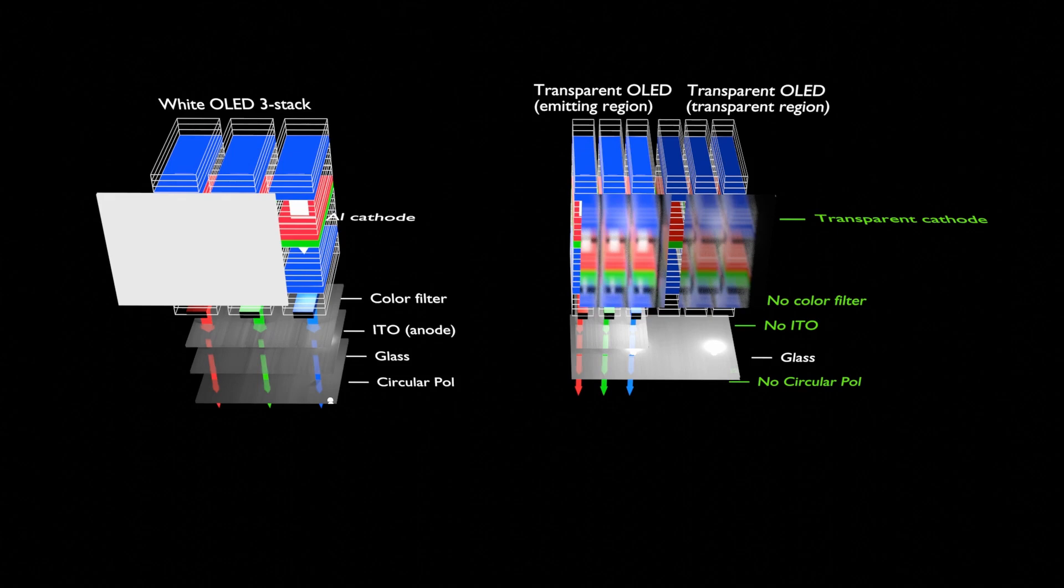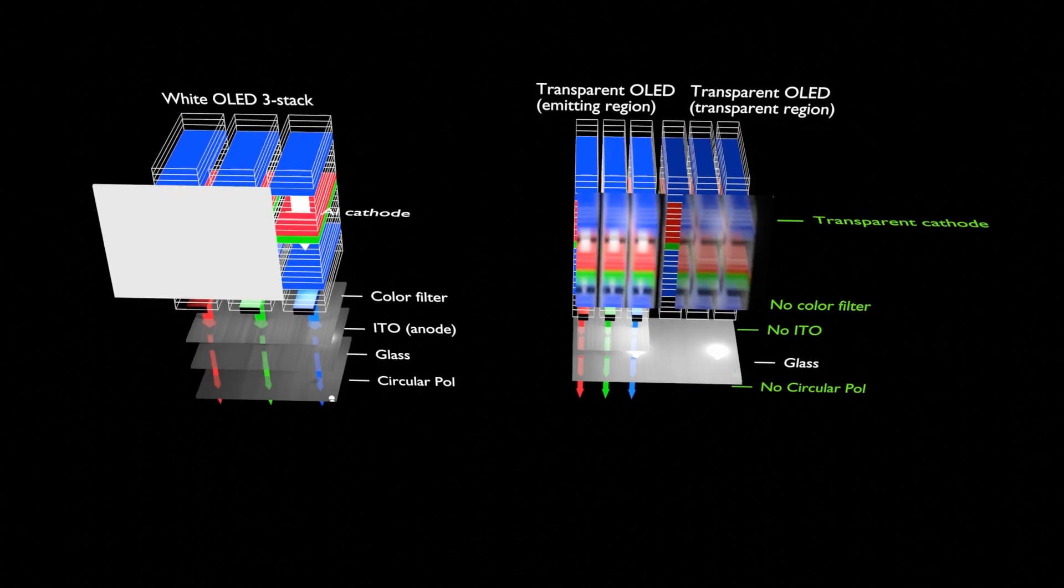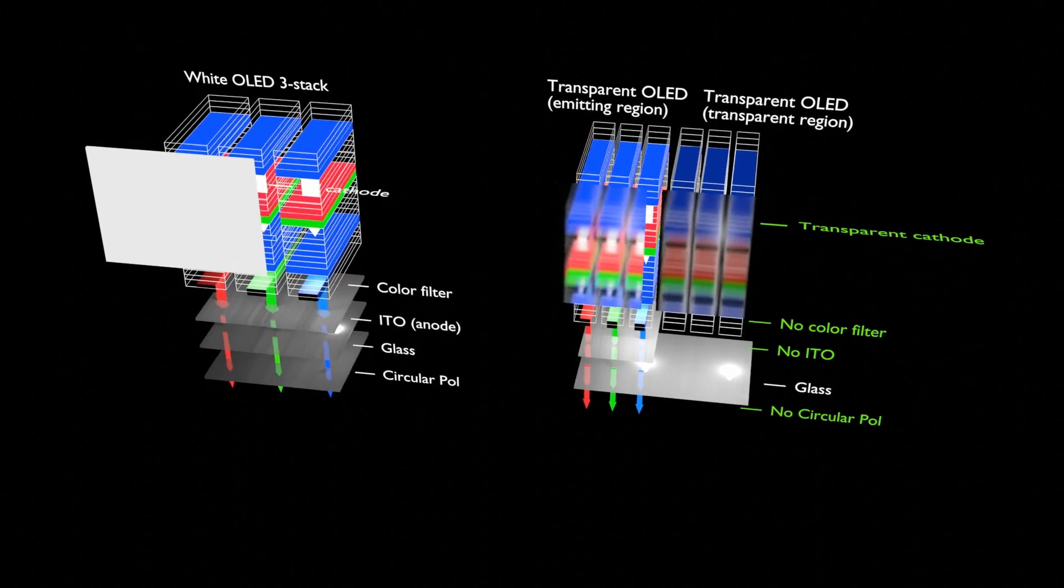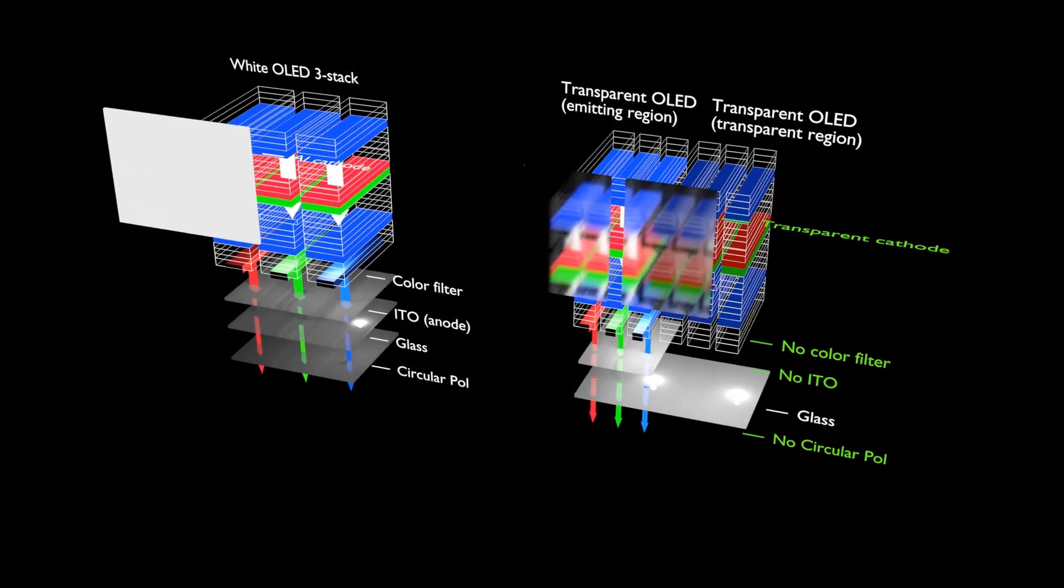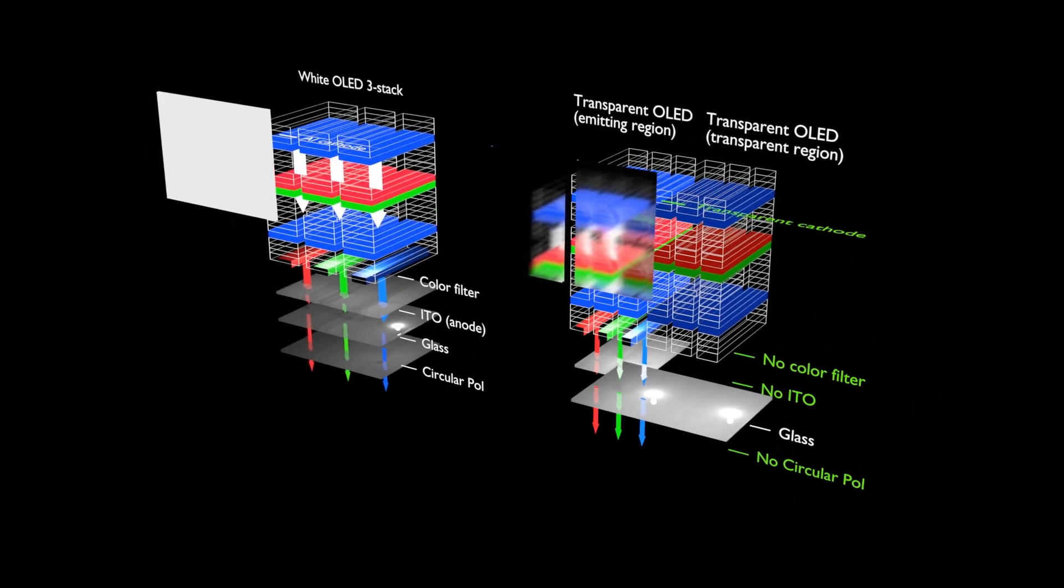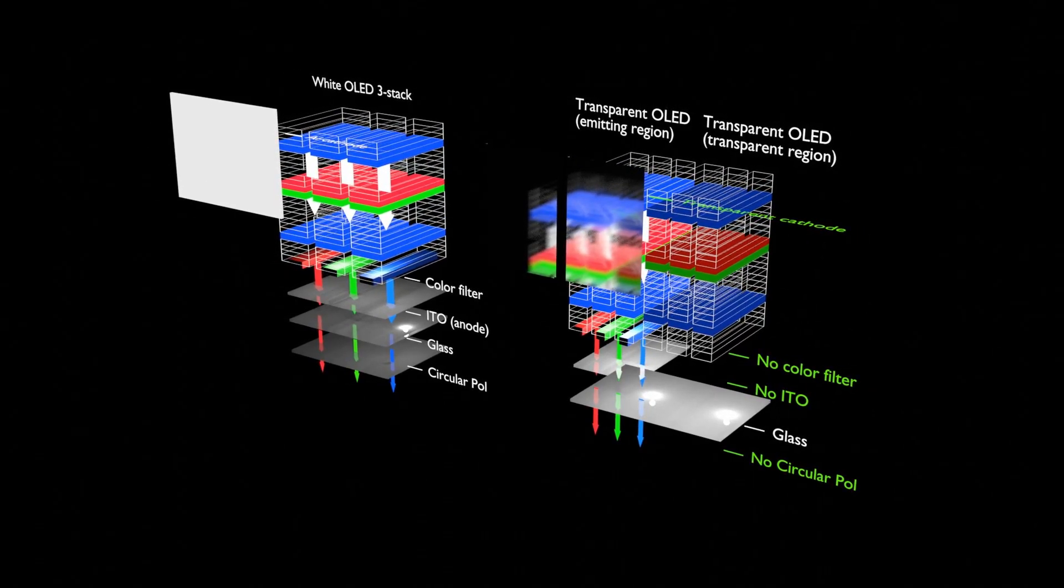A cathode is not needed in a non-light-emitting region, but if a separate process of not forming the cathode or an additional process of removing the cathode is carried out, the difficulty of the process increases and a factor of price increase is large, so it will remain as it is.